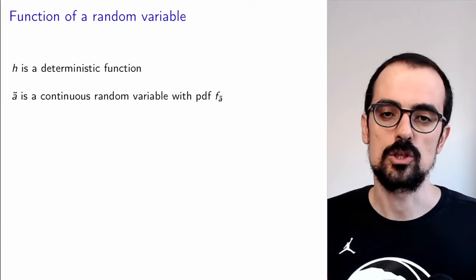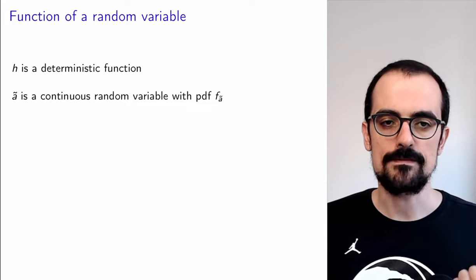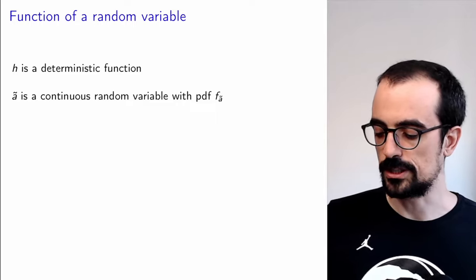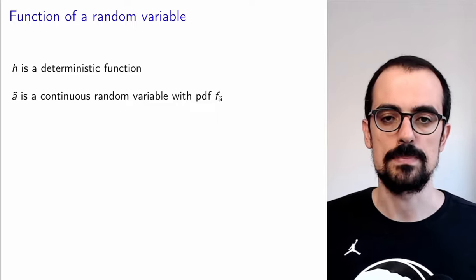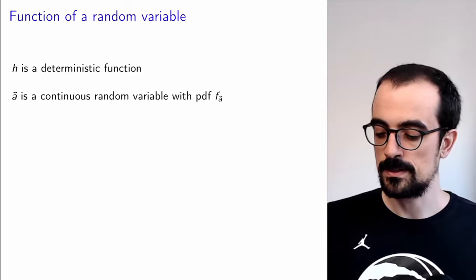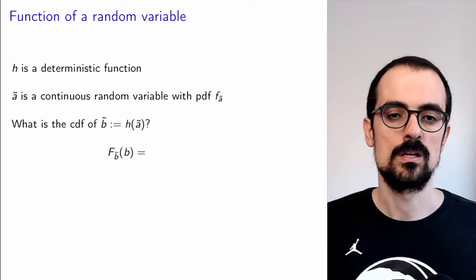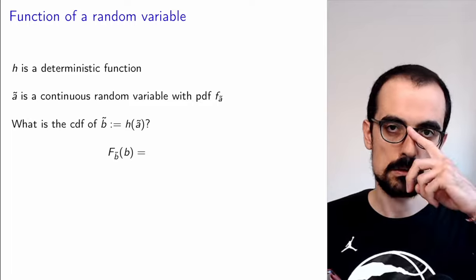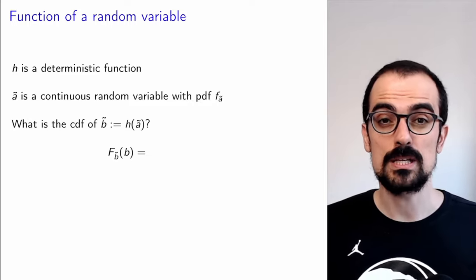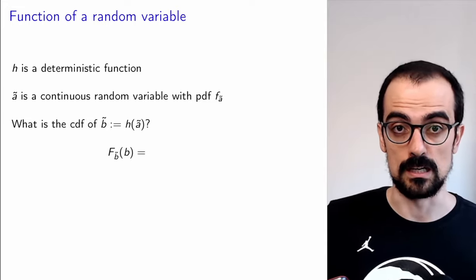Now let's go to our main question. We have h, a deterministic function. We have A, which is a continuous random variable with PDF f_A. Now we want to describe B = h(A). We have two ways of describing it. How do we compute the CDF of B? We do something very similar to what we did for the discrete random variable — we go to the definition.